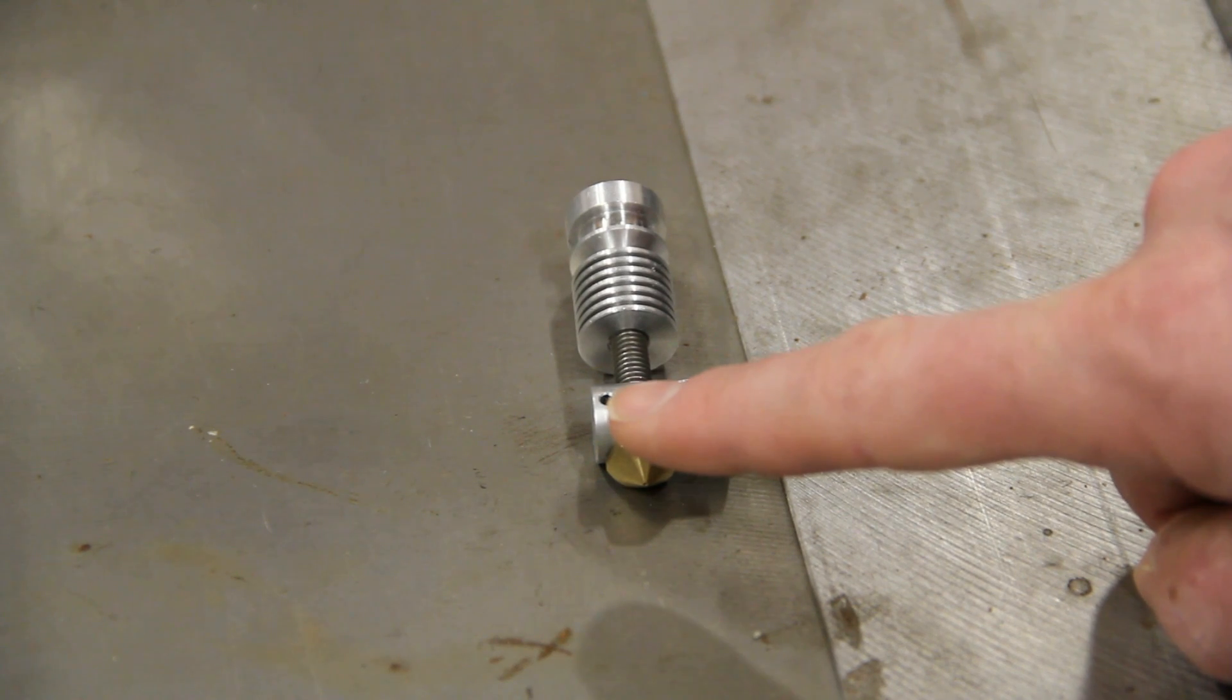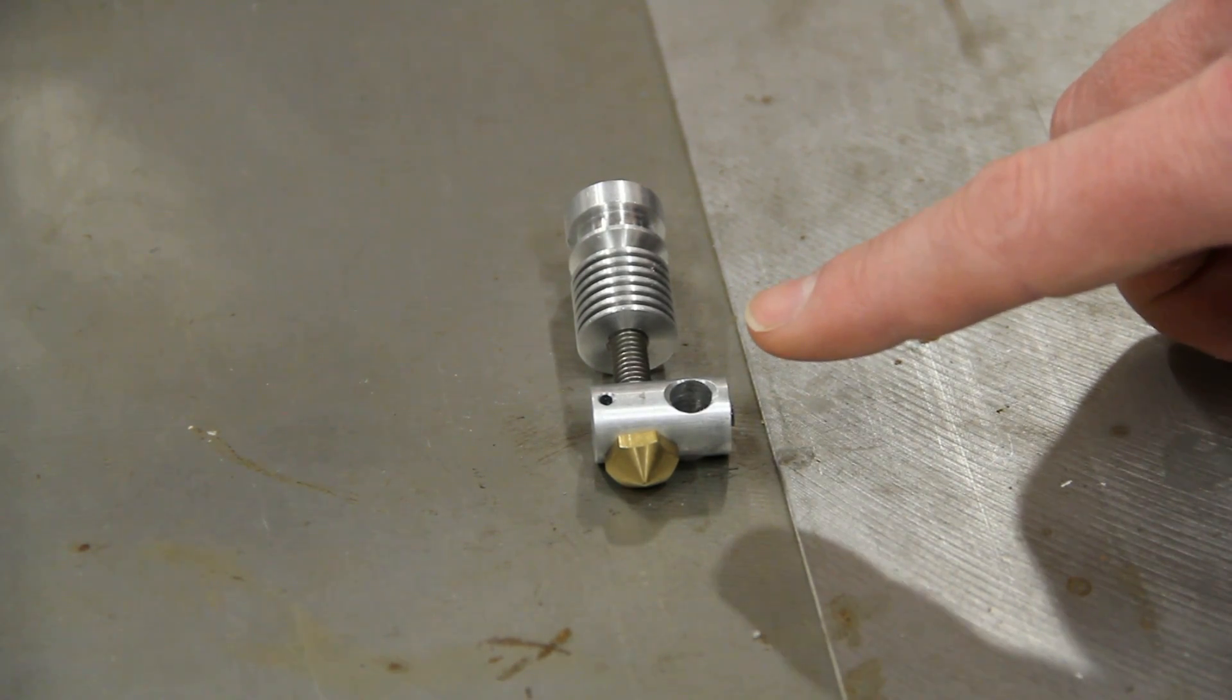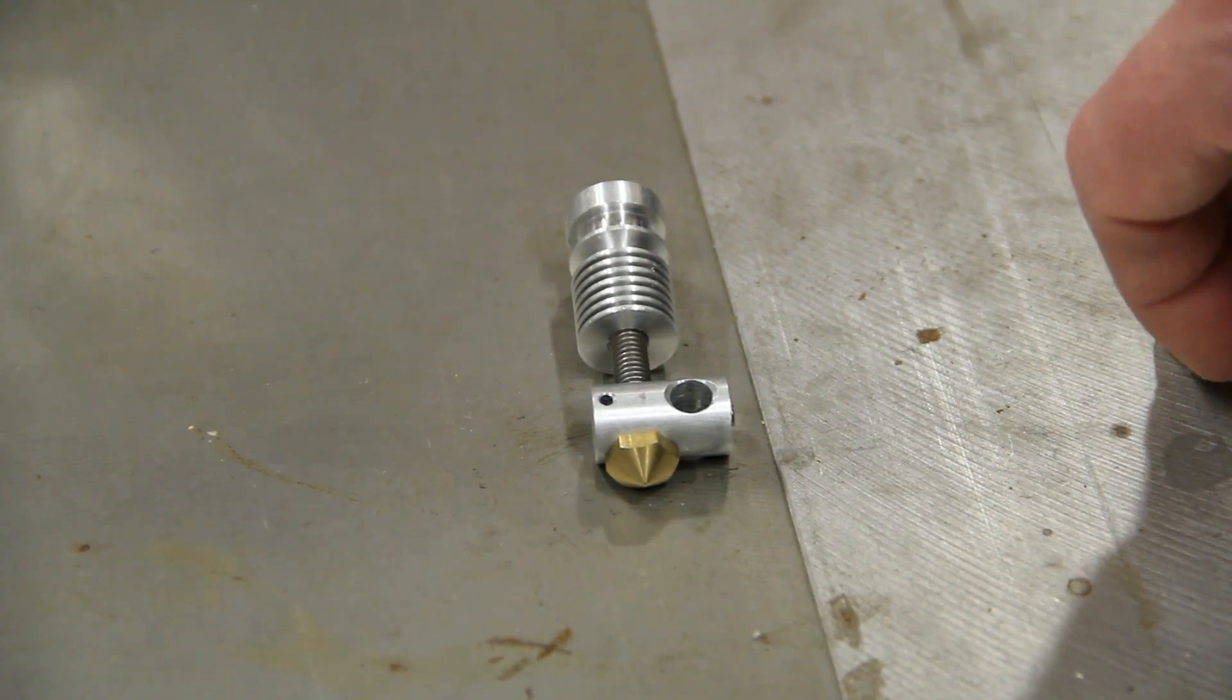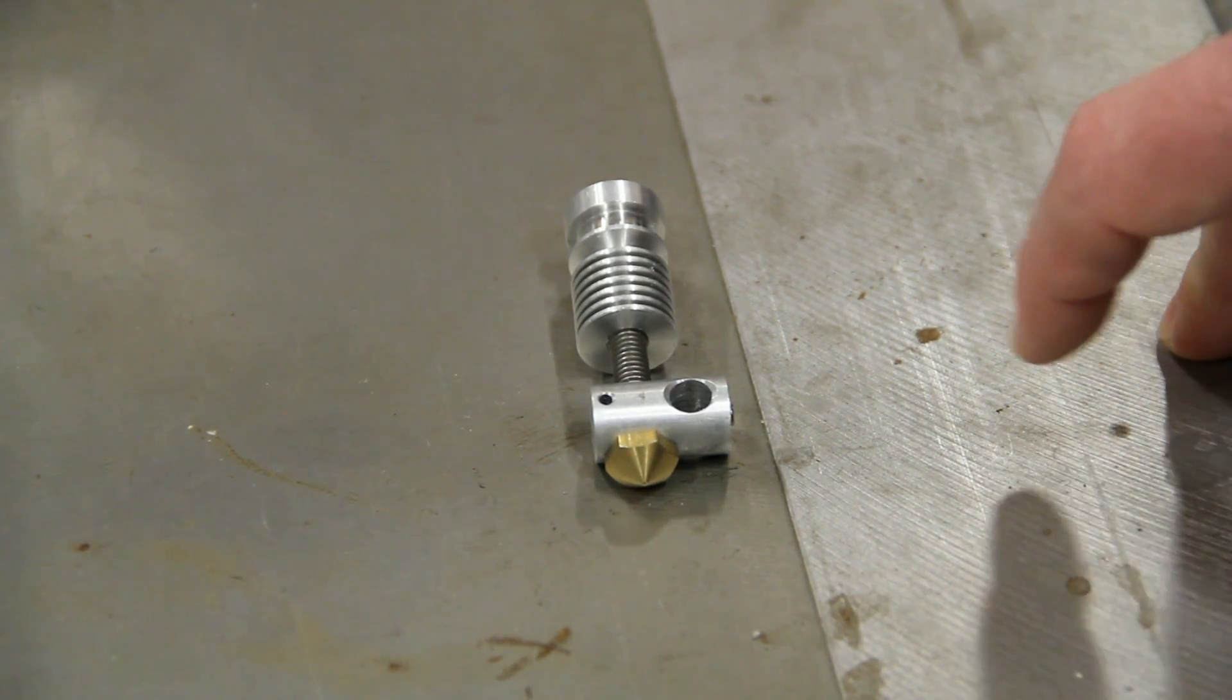This one right here has a through hole and this is a 2mm size so this is going to fit what I would call the thermistor number 5 from the Marlin tables which has a slightly smaller bead than the thermistor version 1. And I apologize for calling them that. I know they do have much longer part numbers but I don't have those in my head right now.